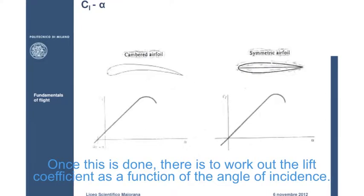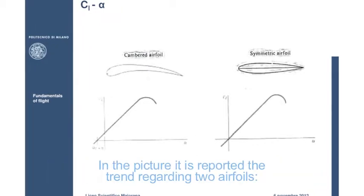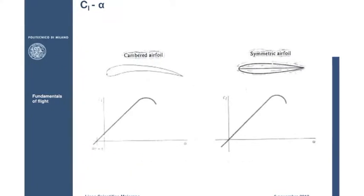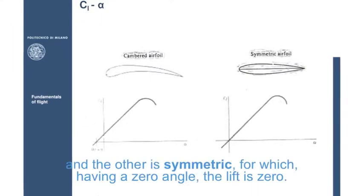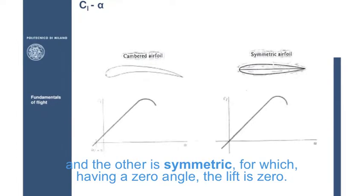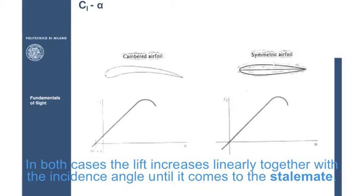Once this is done, there is to work out the lift coefficient, as a function of the angle of incidence. In the picture, is reported the trend regarding two airfoils, one bent, for which the lift is different from zero for a zero angle, and one symmetrical, for which, having a zero angle, the lift is zero. In both cases, the lift increases linearly, together with the angle of incidence, until it comes to a stalemate.